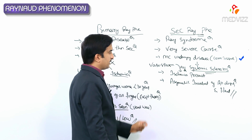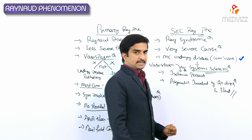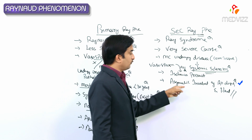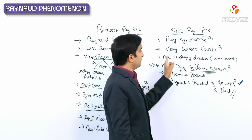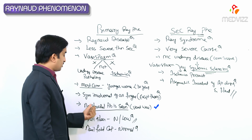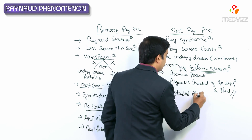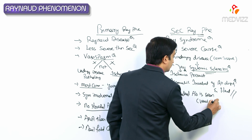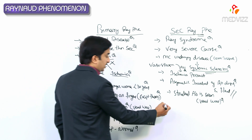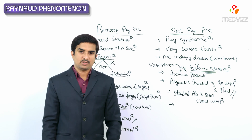Secondary Raynaud's phenomena is associated with underlying pathology, most commonly connective tissue disorders — and most commonly systemic sclerosis. The vasospasm is associated with concurrent ischemia, and asymmetric involvement of all digits including the thumb and hand is seen. In primary, there is symmetrical involvement except the thumb, no structural abnormality in the vessel wall, and nail fold capillaries are normal — whereas in secondary, structural abnormalities and abnormal nail fold capillaries are present.